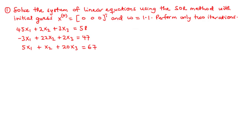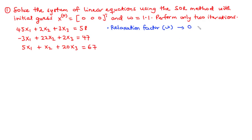The SOR method is just like the Gauss-Seidel iteration method which we studied in the previous lesson. The only difference is that this time we are going to attach a relaxation factor or a weight to it, and this omega typically lies in the range 0 < omega < 2.